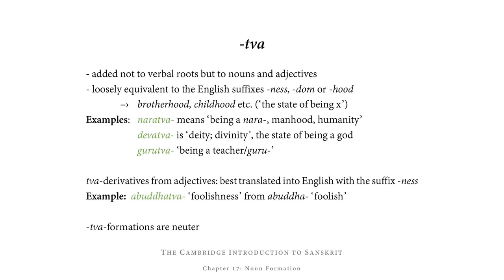The next suffix, -tva, is not added to verbal roots but to nouns or adjectives. In its meaning it is loosely equivalent to the English suffixes -ness, -dom, or -hood, in words such as brotherhood and childhood — referring to the state of being brothers or children. For example, naratva is being a nara, i.e. a man, and therefore manhood or humanity. Devatva would be deity or divinity — the state of being a god. Gurutva would be the state of being a teacher, the quality of being a teacher.